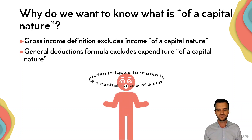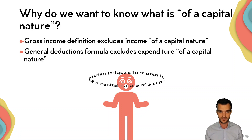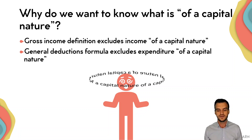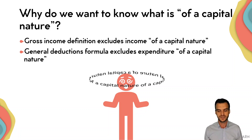The general deductions formula also excludes expenditure that is of a capital nature. This means that income that is of a capital nature is not included in your gross income, but rather is taxed as capital gains tax, while expenditure that is of a capital nature may not be deducted from your gross income.